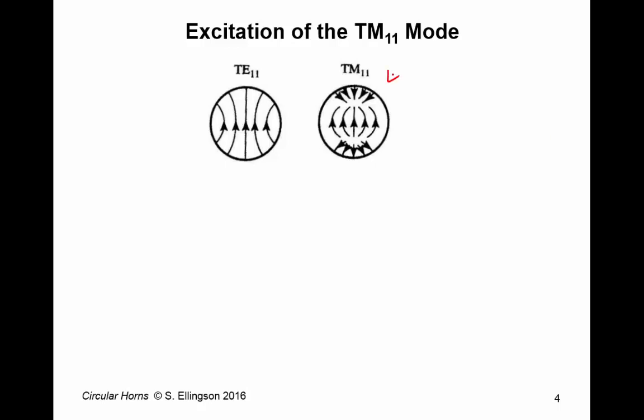In both cases, I'm showing E-field lines. Here's the TE-1-1 mode. Here's the TM-1-1 mode. In both cases, you see E-tan is 0 at the walls of the waveguide, as it must be.